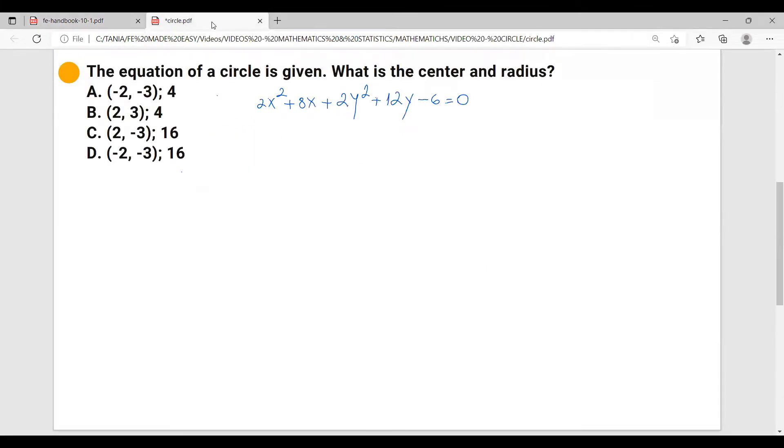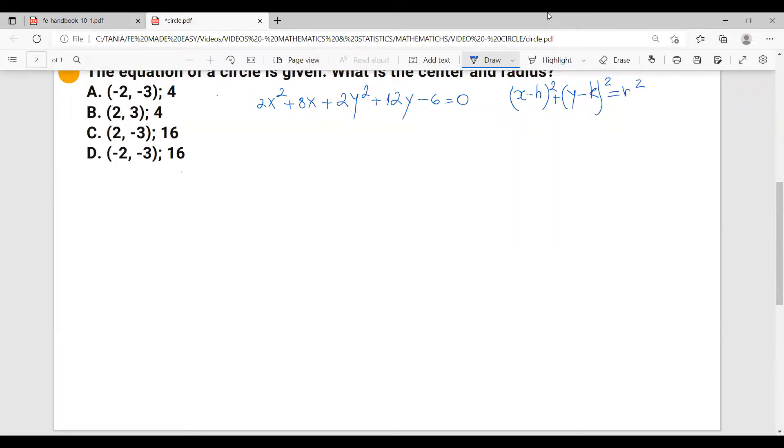So let me write this formula down here: (x - h)² + (y - k)² = r². In our case, let's also bring the six on the other side. So we'll have 2x² + 8x + 2y² + 12y = 6. And you notice we can divide this by two, and this will result in x² + 4x + y² + 6y = 3.